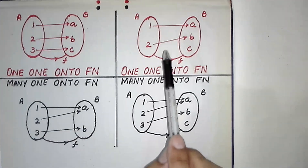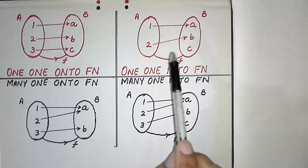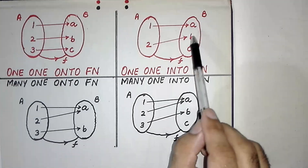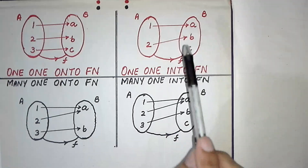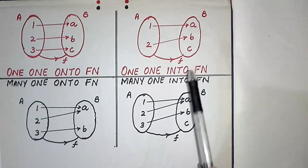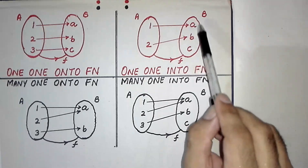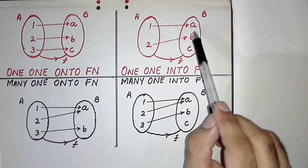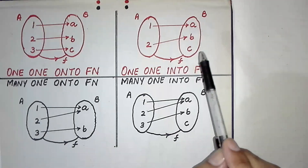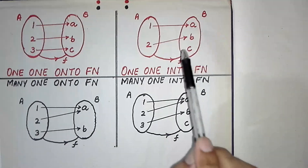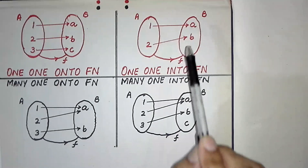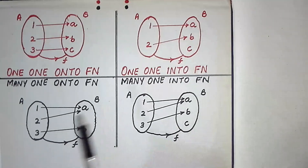If a function is both one-one and into, then it is called a one-one into function. Here the second elements of all ordered pairs are non-repeated, so this is one-one, and the range is not equal to co-domain but is smaller than co-domain, so this is also into. Therefore this is an example of a one-one into function.